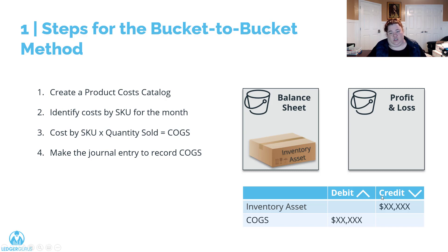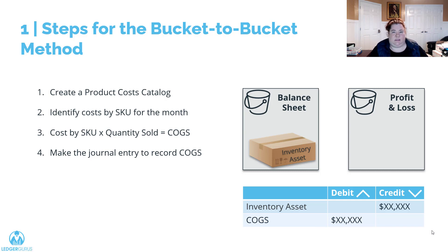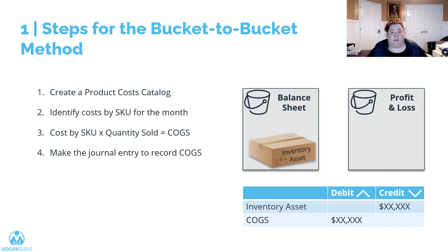You can see the structure for that journal entry below. One additional thing to mention: once a period — whether monthly or annually — you're also going to need to true up against an ending inventory count and correct any balances that need to be adjusted. You look at that ending count, compare it to the ending balance on your balance sheet, and true up that balance using cost of goods sold as the wash account. Now let's dive in and look at how this is actually done in practice.